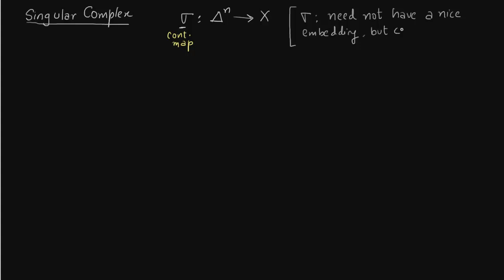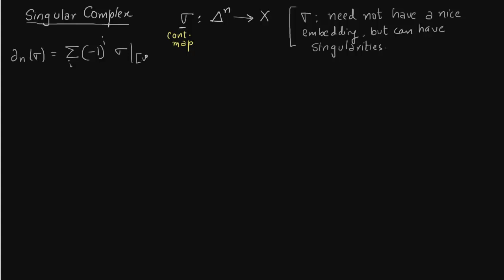Another important point is these maps are continuous. They basically act on the components: this map sigma will act continuously and will take those particular components in C0. We need to talk about the boundary of the map. The boundary is precisely what it is in simplicial complexes — just that instead of the simplicial complex we write sigma acting on that simplicial complex.